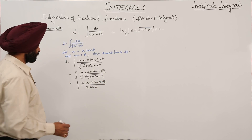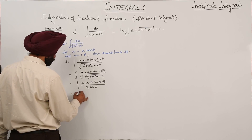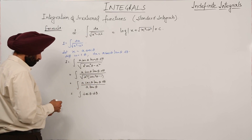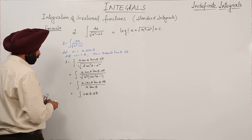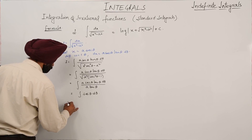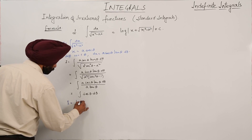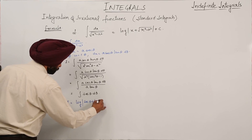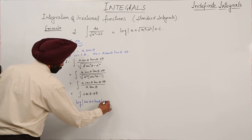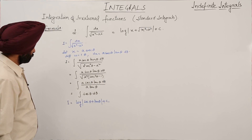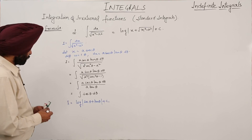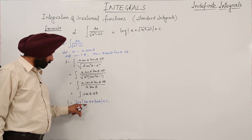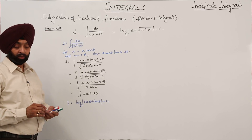This becomes integration of a sec θ tan θ dθ upon a tan θ, since sec squared θ minus 1 is tan squared θ. We are left with ∫sec θ dθ. The integration of sec θ dθ is log|sec θ + tan θ| + c1.